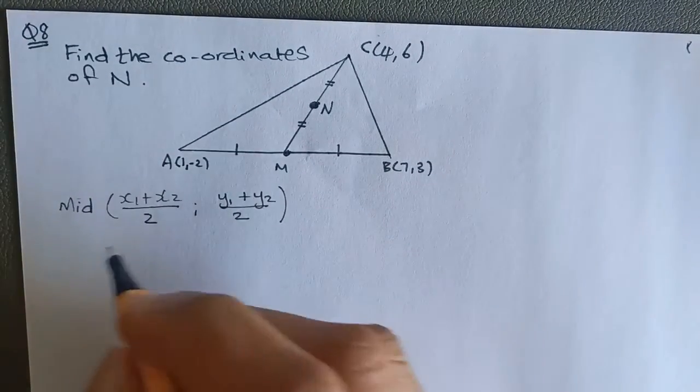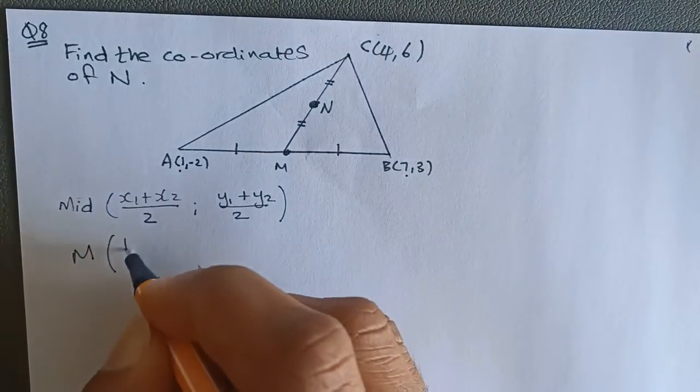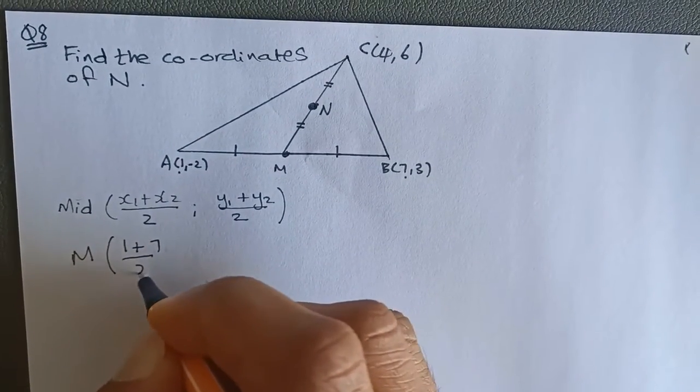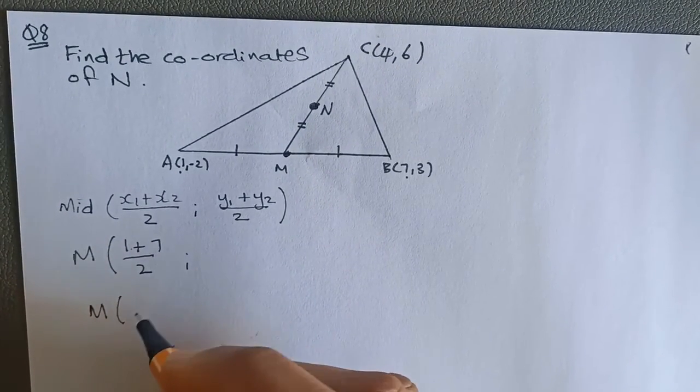The first point we're going to find is M. So we're going to take 1 and 7, add it up, divided by 2. And we'll get M to become 1 plus 7 is 8, divided by 2 is 4.